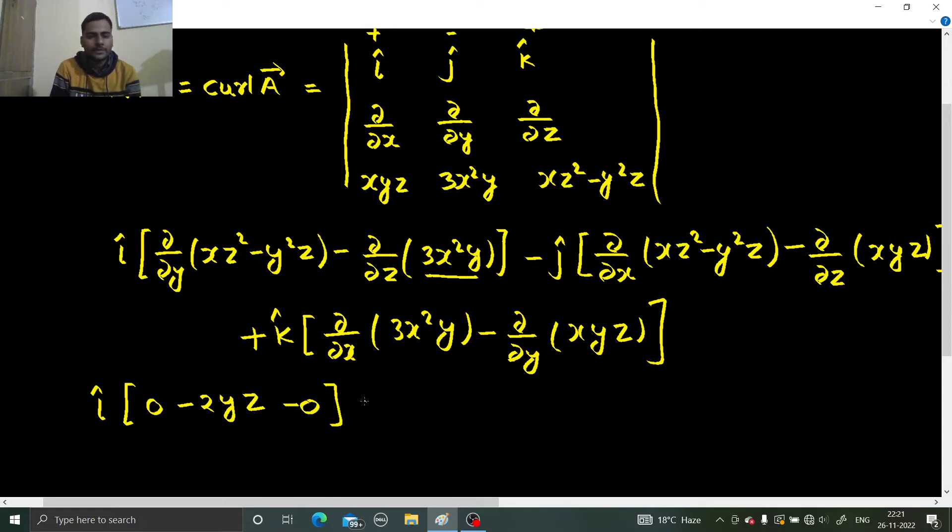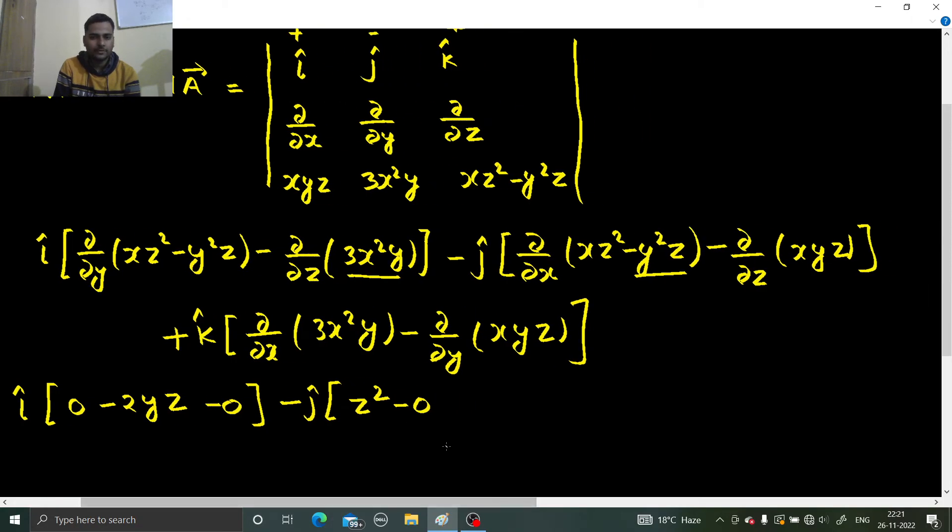Coming to j. Derivative with respect to x: derivative of x with respect to x is 1, so you simply get z². Derivative with respect to x will be 0. Derivative with respect to z of xyz: x and y can be taken out, derivative of z is 1, so you get minus xy.